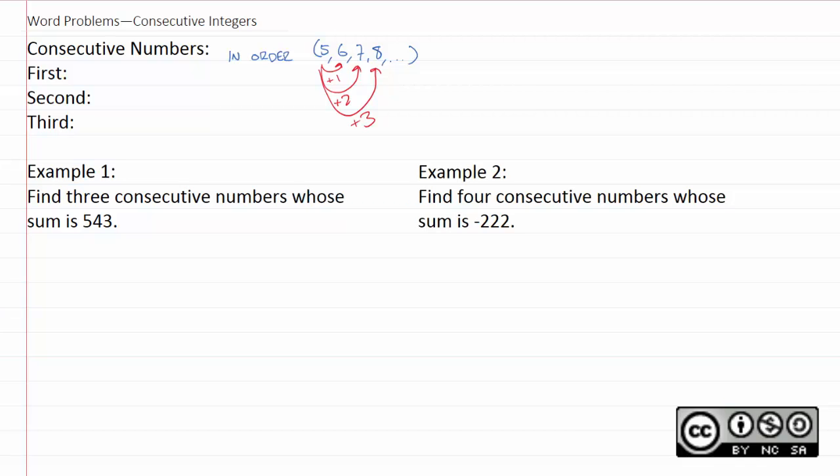We're going to do that exact same thing. The only difference is instead of five, we're going to say x. Then the next one would be x plus one, the next one would be x plus two, and so forth.